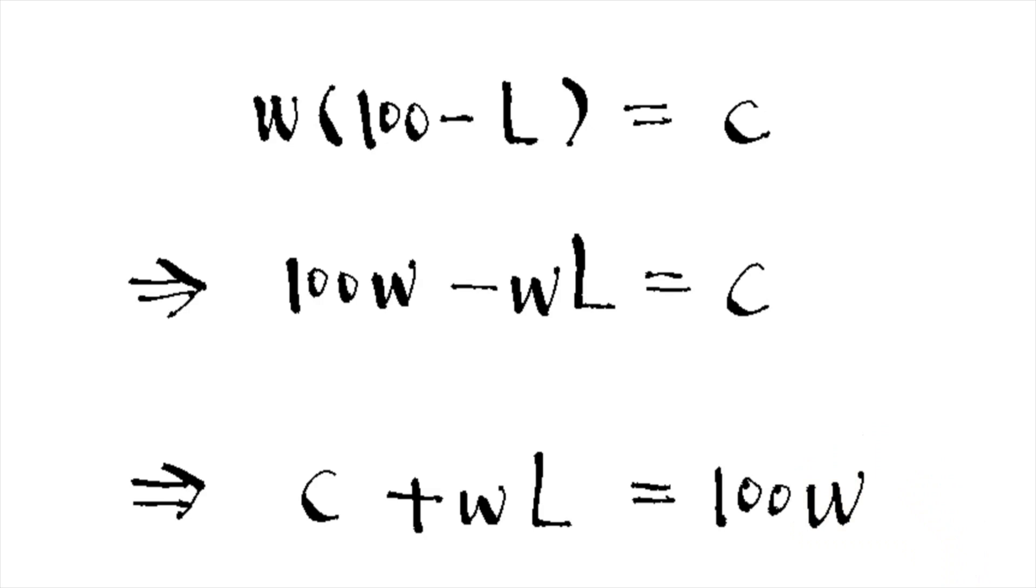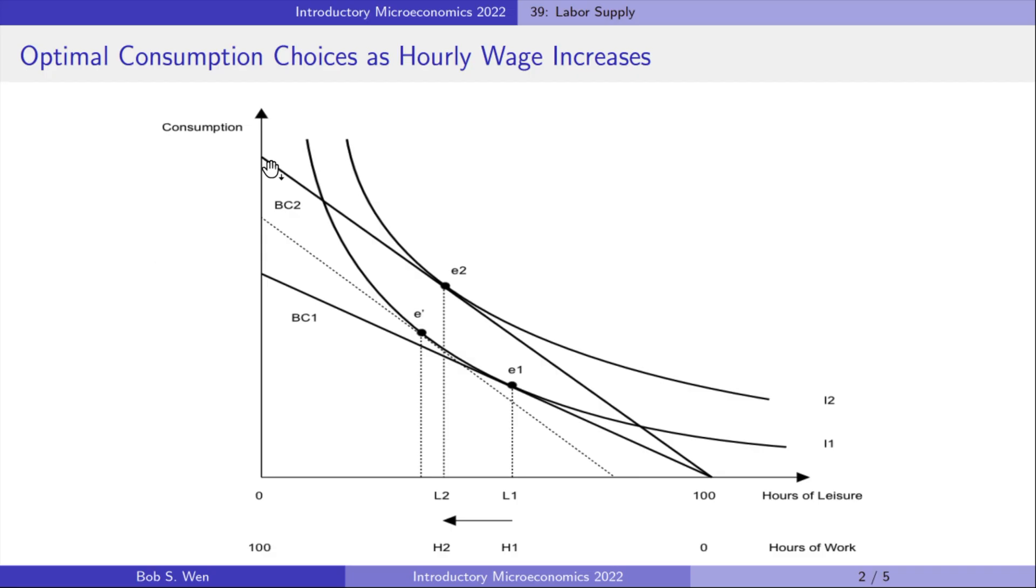Notice that the price of leisure is the opportunity cost of leisure time. Amy gives up one hour's wage for one hour of leisure. As hourly wage increases, the vertical intercept increases and the horizontal intercept is unchanged. So the budget line rotates this way.